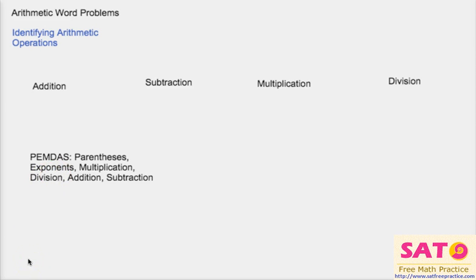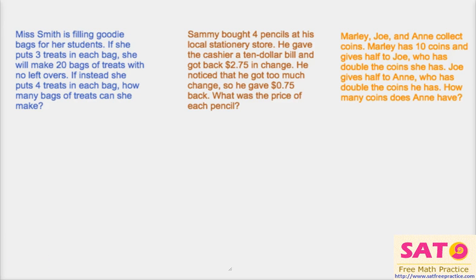So let's get started with a few practice problems. Ms. Smith is filling goodie bags for her students. If she puts three treats in each bag, she will make 20 bags of treats with no leftovers. If instead she puts four treats in each bag, how many bags can she make? We can see she has three treats in each bag and there are 20 bags, so we simply multiply: 3 times 20.